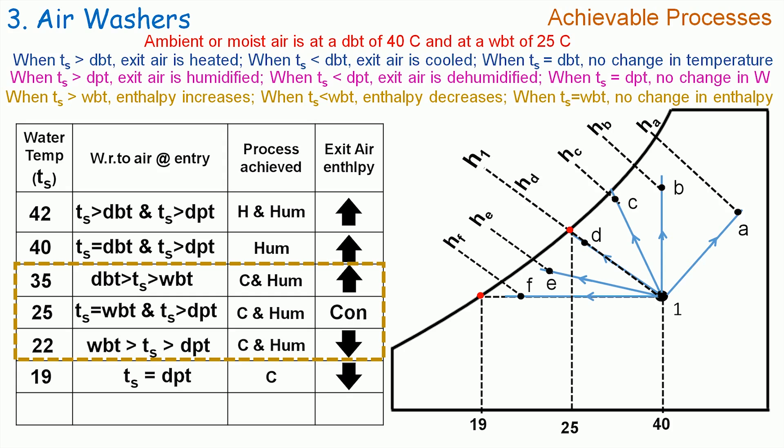Let us now supply the spray water at 15°C. Here TS is less than dry bulb temperature, hence air is cooled, and TS is less than the dew point temperature also, hence air is dehumidified. Therefore, the achievable process by the air washer is cooling and dehumidification. If we plot it on the psychrometric chart, then the process 1G will be representing it. The enthalpy HG is less than H1, hence the exit air enthalpy decreases. These are the various processes that are achievable with air washers.